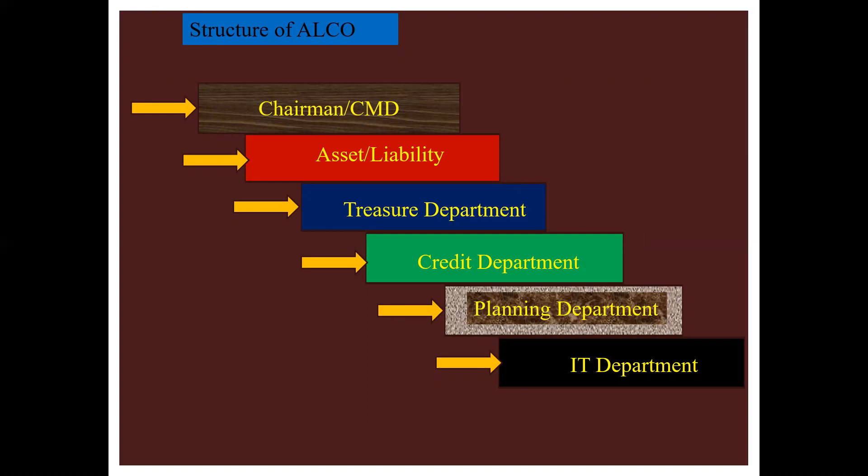The structure of ALCO comprises the following departments: the chairman at the top, followed by the asset liability department, treasury department, credit department, planning department, and the IT department.